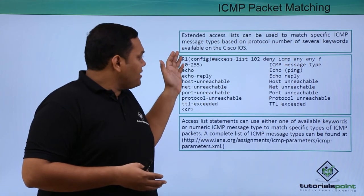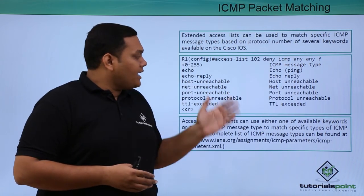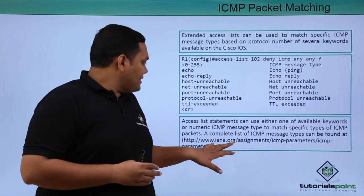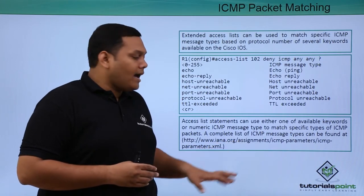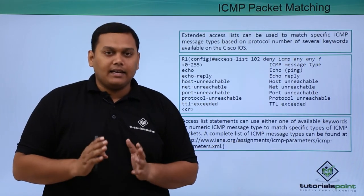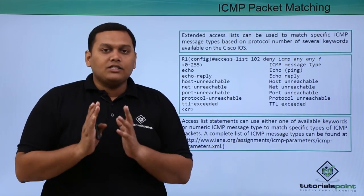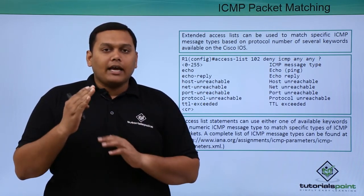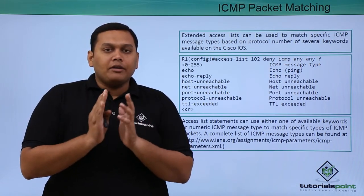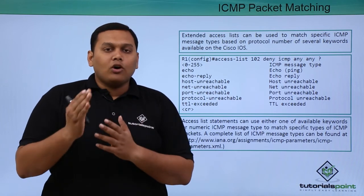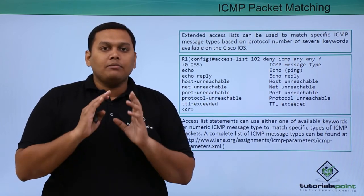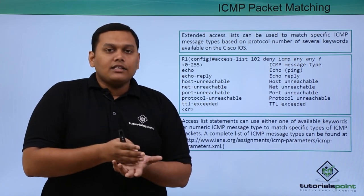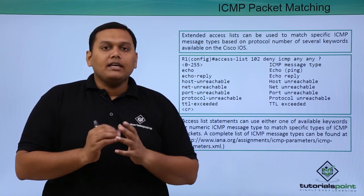These access statements can use any of the available keywords, and all keyword details are provided on the IANA.org website. This is very important because ICMP protocol types — echo, echo reply, port unreachable, and messaging alerts — must be configured very properly.